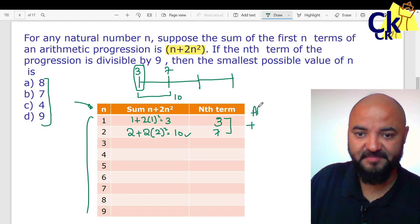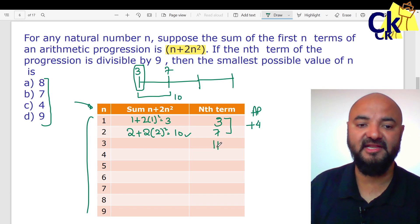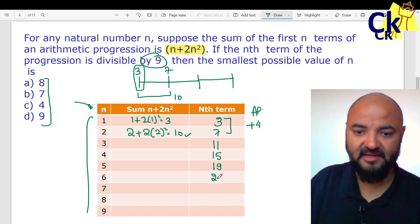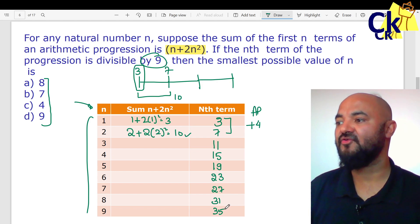This is in AP series, I have to add 4. Added 4, third term came as 11. Fourth term came as - keep adding 4 - 15. Next term came as 19. I am looking for a number which is divisible by 9. Next came 23. Next came 27. Add 4 more, 31, 35.